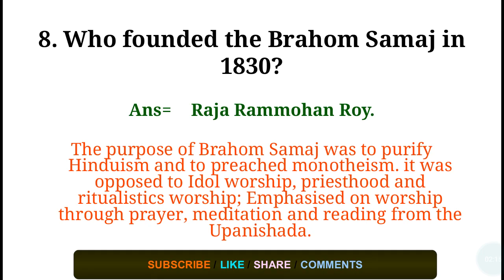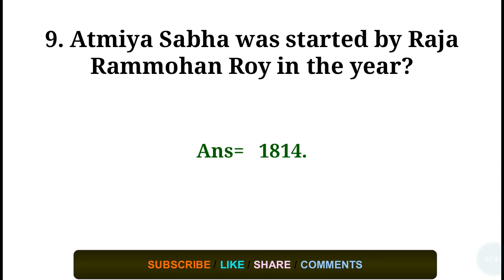Question number eight: Who founded the Brahmo Samaj in 1830? Answer: Raja Ram Mohan Roy. The purpose of Brahmo Samaj was to purify Hinduism and to preach monotheism. It was opposed to idol worship, priesthood, and ritualistic worship, and emphasized worship through prayer, meditation, and reading from the Upanishads. Question number nine: Atmiya Sabha was started by Raja Ram Mohan Roy in the year 1814.